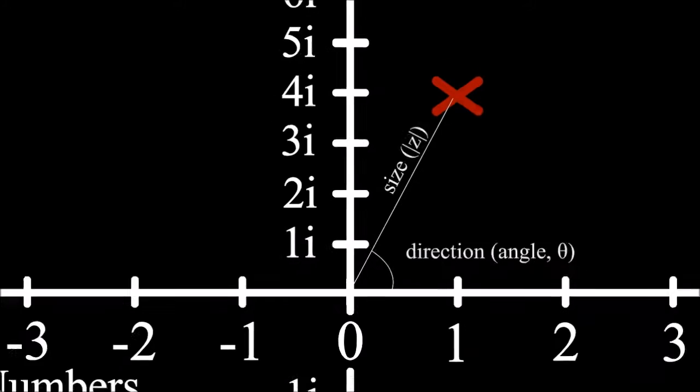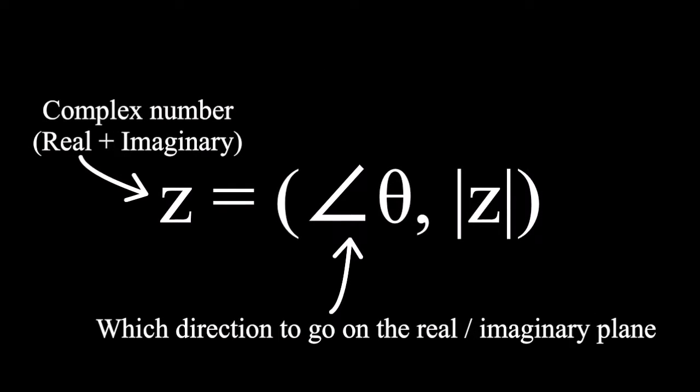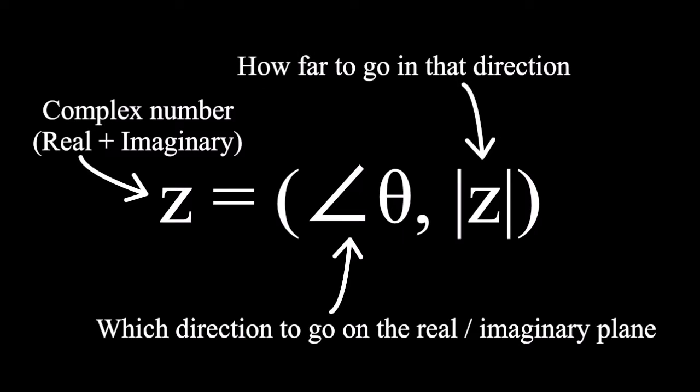So, an alternative way to define a complex number would be to take the angle of this triangle, and then move forward this length, which gets us to the same point representing the number. This polar representation using an angle and the size is more useful when we're multiplying complex numbers together.